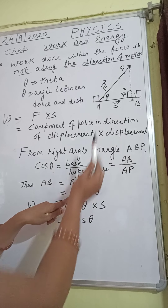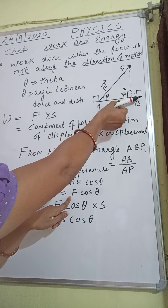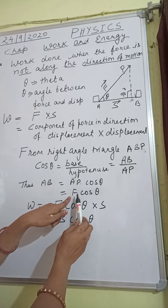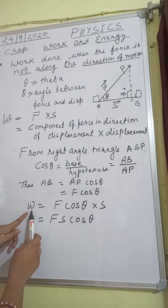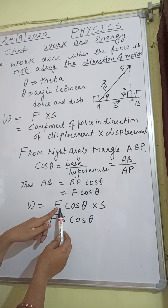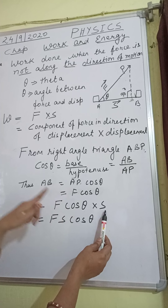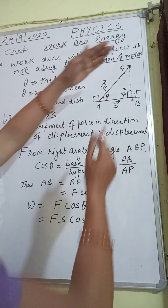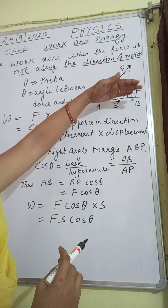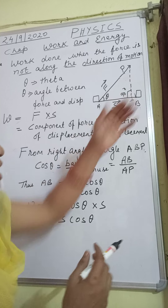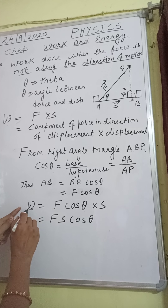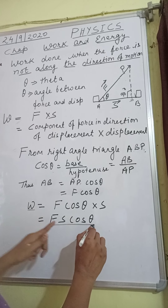AP is F — we have found the relation along the horizontal x-axis — so the component is F cos theta. You know work done equals F into S, but F we have now found as F cos theta, so I have written work done equals F cos theta into S, in the direction of AB. Now both components are on the same direction and you can easily find F cos theta into S. So work done equals F cos theta into S.